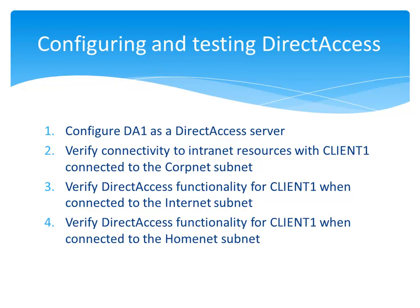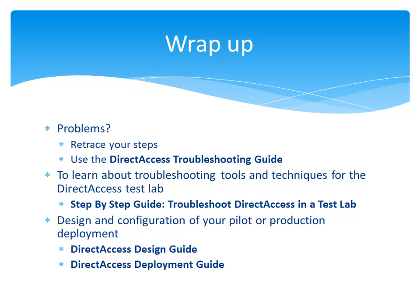In step 4, you connect Client1 to the homenet subnet and once again demonstrate that you can access the intranet resources in the same way as you did in step 2. If you're having problems with the Direct Access test lab, please retrace your steps. This test lab is very specific in its configuration, and an error in an IP address or a URL can impair the Direct Access functionality. If after retracing your steps you're still having problems, search for and find the document called the Direct Access Troubleshooting Guide for resources on Direct Access tools, troubleshooting methodologies, and help for specific problems.